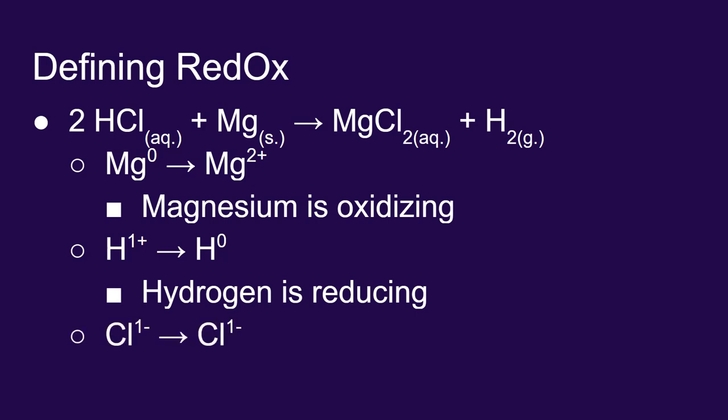What about the chlorine? The chlorine starts out with a negative one charge in hydrochloric acid and stays with a negative one charge in the magnesium chloride. Chlorine is not doing anything in this process. It's a spectator. The magnesium is oxidizing and the hydrogen is reducing.